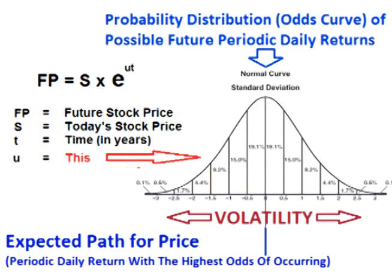We can take that expected path of price along with the volatility and form what is known as a probability distribution of what the future path of price will be. In other words, we take the expected path of price and the volatility and form a range around the expected path that tells us the probability or odds of any path occurring. We can use this to determine the probability of what the future price will be — not only for pricing options, but also for things like Monte Carlo simulation, which is used to determine possible future outcomes of price, and value at risk, which is used to determine things like expected maximum risk of loss.